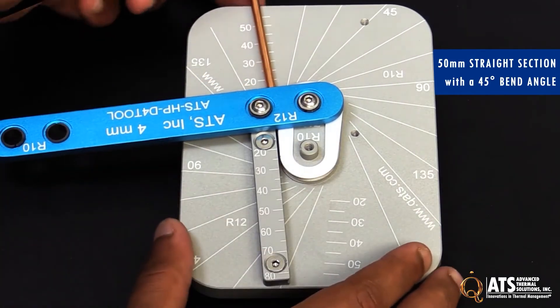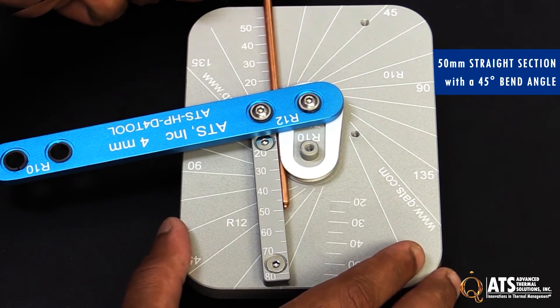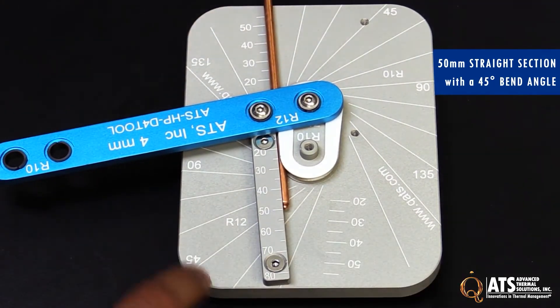To use it, I'm simply going to slide the heat pipe through here and line it up until it gets to the 50 millimeter mark.